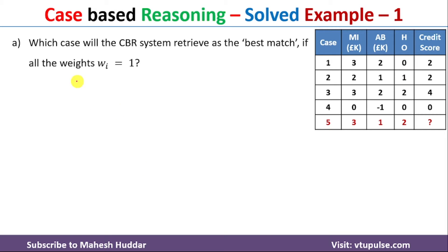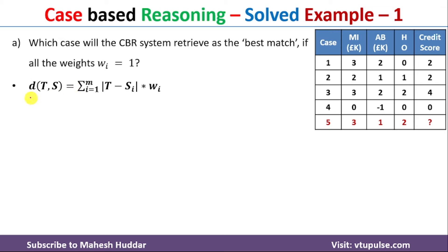The first question is: which case will the CBR system retrieve as the best match if all the weights are assigned to 1? First, we need to find the distance between the target case and each source case. Based on that distance, we select one of these cases as the best match. The distance formula is: d(t, s) = summation from i=1 to m of |t_i - s_i| * w_i.